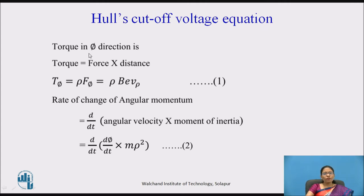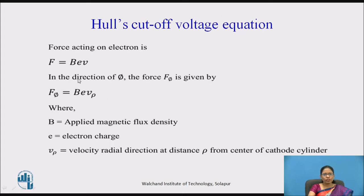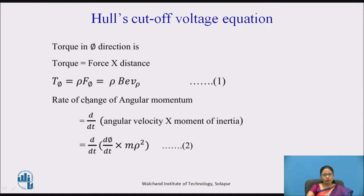Torque in the phi direction is given by the basic equation: torque equals force times distance. So torque in the phi direction is rho × F_phi = rho × BEV_rho, giving us rho·BEV_rho. This is equation 1.